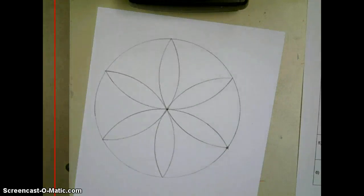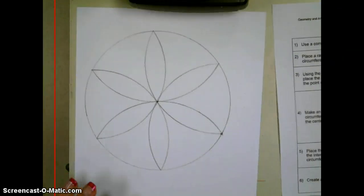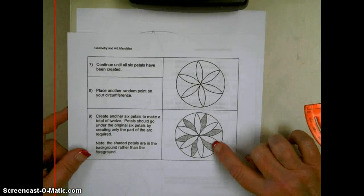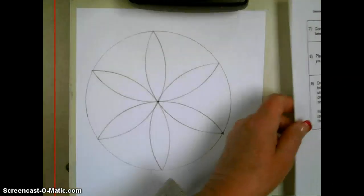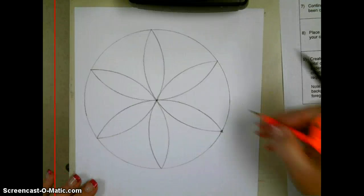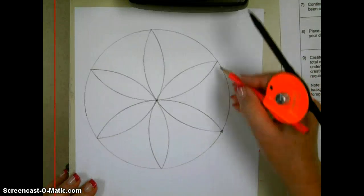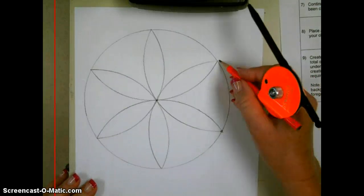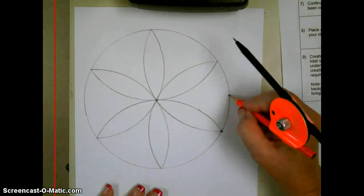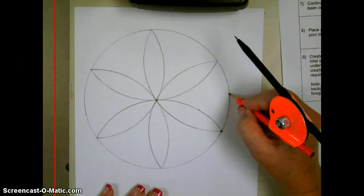Now, in order to go from six petals to twelve petals, it's very simple. You're going to do the same exact process, and you just have to pick a point of where to begin the same set of arcs. You're going to pick it between two of your petals and try to get it as much in the middle of the two as you can.